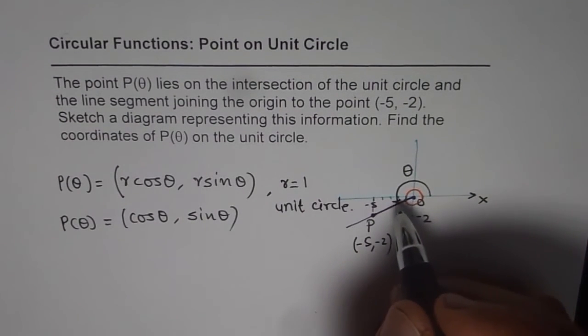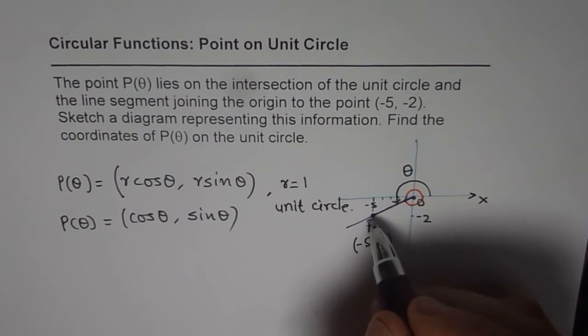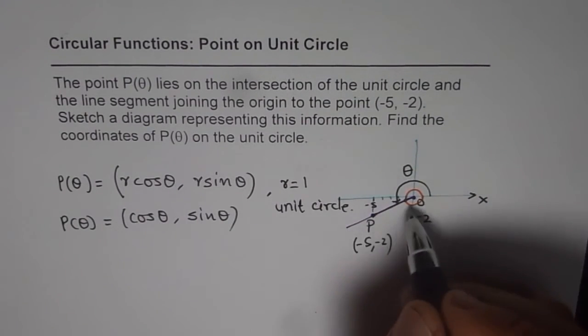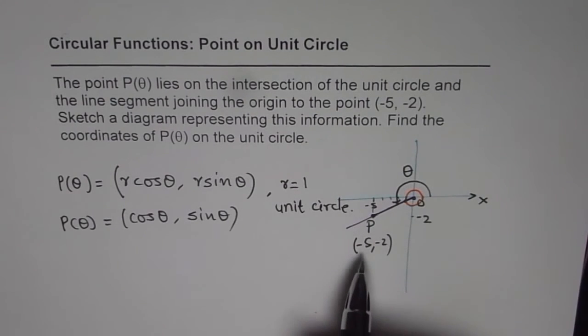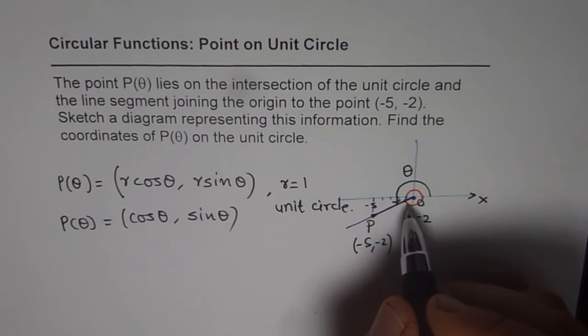Now cos θ is a ratio. It really doesn't matter whether the point is on the circle or anywhere else. These are similar triangles and therefore the cos θ value is going to be same. So let's find cos θ using the point coordinates (-5, -2). Cos θ is adjacent over hypotenuse.